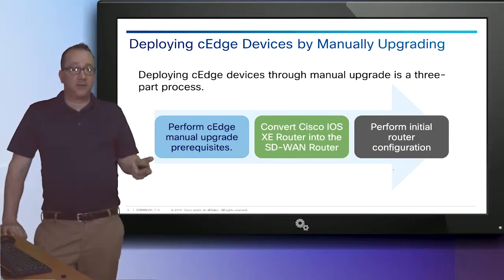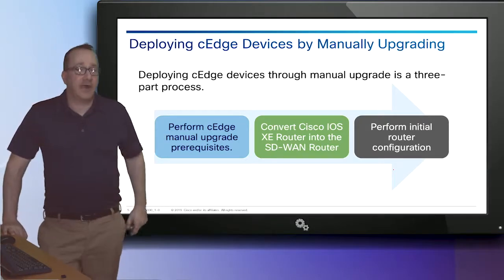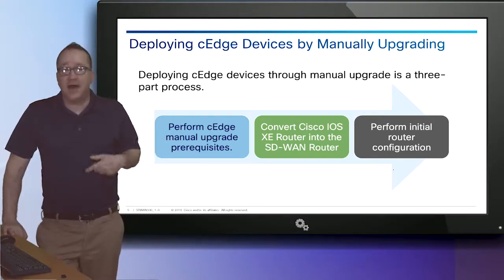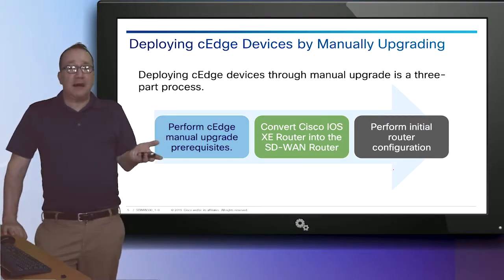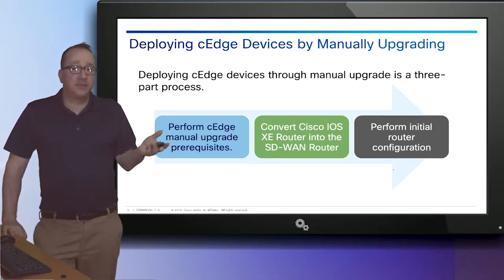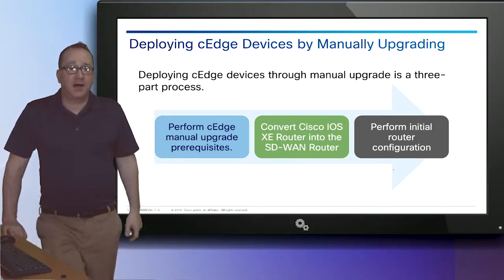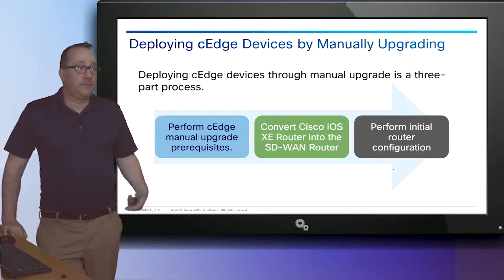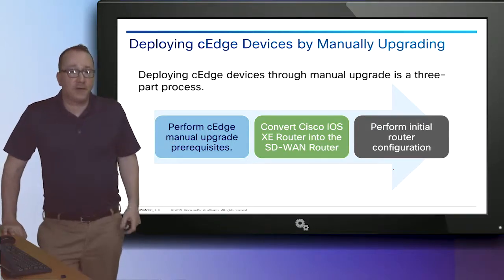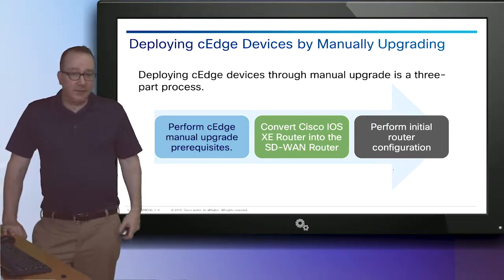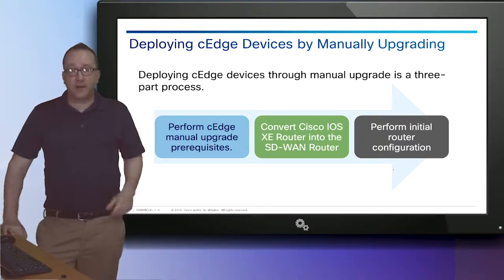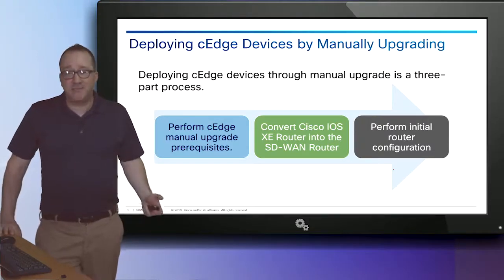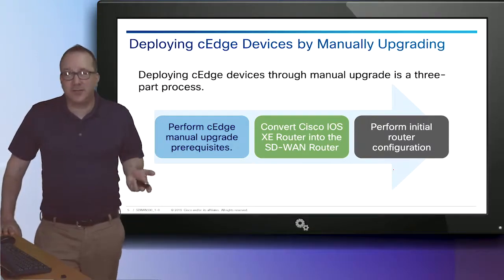To perform a CEdge manual upgrade, we need to make sure we meet the prerequisites. We're going to copy the IOS image onto the router, reboot it, and then perform initial router configuration. If you've ever upgraded IOS on a router, it's essentially the same process with a few extra steps.